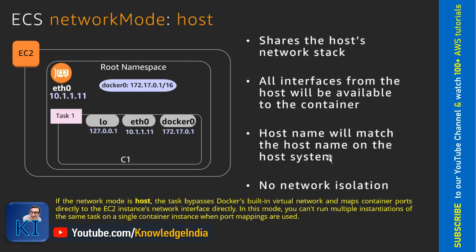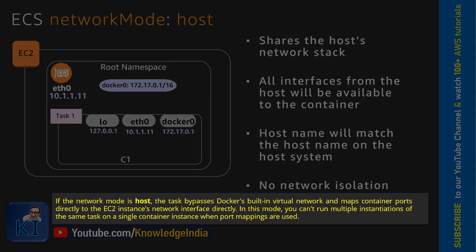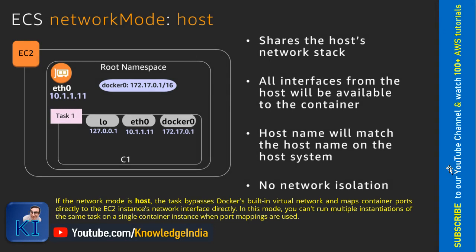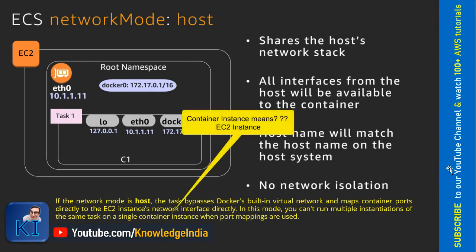The last and final type is Host mode. In ECS context, 'host' means our EC2 instance where containers are running. All the network interfaces from the host will be available to the container. ENIs are still attached at the EC2 level, and containers will have access to those ENIs. Security groups also get attached at the EC2 level. In Host mode, the task bypasses Docker's built-in virtual network and maps container ports directly to the EC2 instance's network interface.